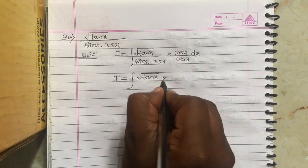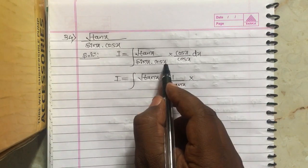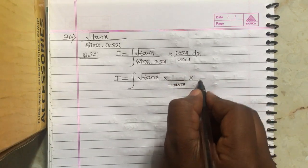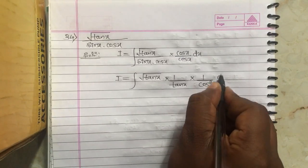Cot x can be written as 1 by tan x. Then we multiply cos x into cos x to get cos square x dx.